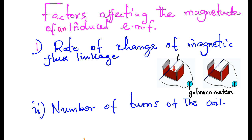We notice that the deflection on the galvanometer depends on the rate at which the conductor is moved — with the biggest deflection when the conductor is moved very fast, and the lowest deflection when the conductor is moved very slowly.